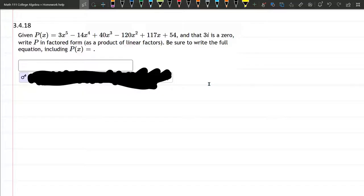In this problem we are given a polynomial and we're supposed to write it in factored form, so we need to find all the factors. We're also given additional information which is that 3i is a zero.